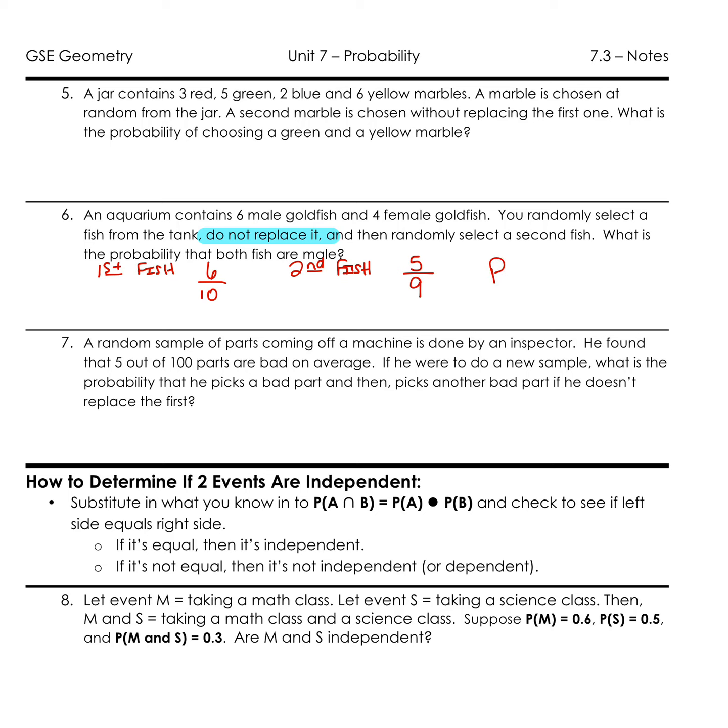So again, we got our two simple events that happened. Now we want to find our compound. So we want a probability of male, male. So the probability of selecting the first male was six out of ten. Probability of selecting our second male is five out of nine. Multiply our fractions straight across, and I get 30 out of 90. And of course, we can reduce that to be one third. So the probability of reaching into that tank and getting two male fish is one out of three.